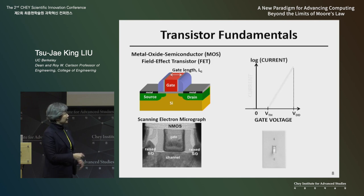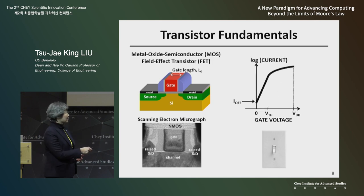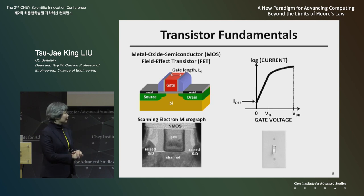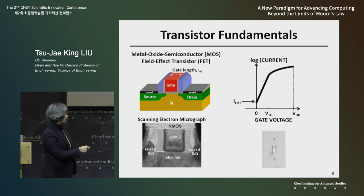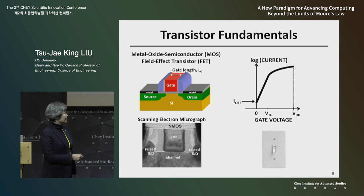Even with zero volts applied to the gate voltage, there is some non-zero leakage current. The transistor will always allow some current to flow between the source and drain, even when there's no voltage applied to the gate.